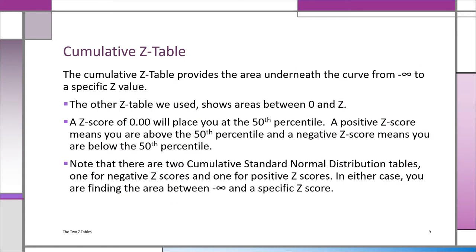As we explained, the cumulative Z table provides the area underneath the curve from minus infinity to a specific Z value. The other Z table that we used shows you the area between 0 and Z. Now, a Z score of 0 always puts you at the 50th percentile. And a positive Z score means you're above the 50th percentile. A negative Z score means you're below the 50th percentile. And as explained before, there are two cumulative standard normal distribution tables, one for negative Z scores and one for positive Z scores.